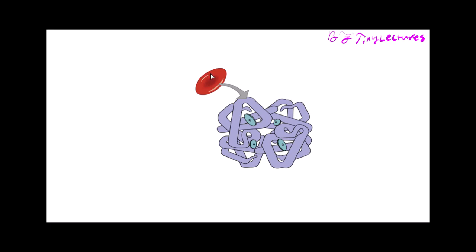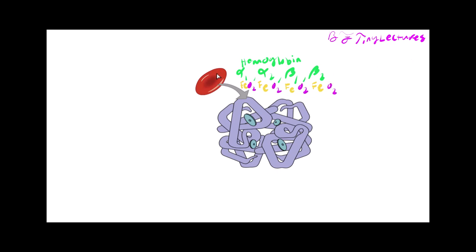When we zoom in on an erythrocyte, we notice that it has thousands of little molecules called hemoglobin. Hemoglobin is created by four different subunits: alpha-1, alpha-2, beta-1, and beta-2. Each subunit has iron, and that iron is called a heme group. Each heme group is going to be connected to a molecule of oxygen. The erythrocyte has thousands and thousands of hemoglobin molecules, and therefore we can hold thousands and thousands of molecules of oxygen. Technically, one red blood cell can hold 1.2 billion molecules of oxygen — it's very efficient.